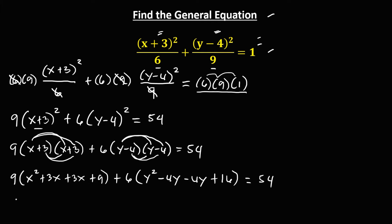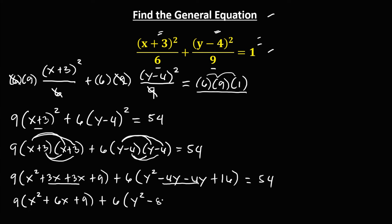Then simplify: we have 9 times x squared, then 3x plus 3x gives plus 6x — wait, that's plus 54x — then plus 9, then plus 6 times y squared, this negative 4y and negative 4y gives negative 8y, then plus 16, equals 54.